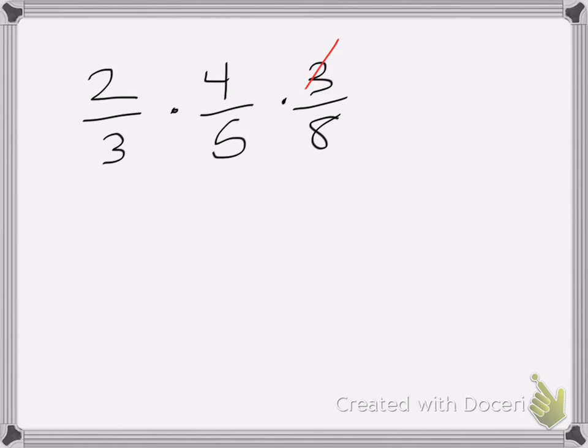Well, I can cancel the 3s. 3s are the same. 3s become 1s. I can cancel the 8 and the 4, 4 becomes a 1, 8 becomes a 2. And now I can also cancel this 2 and this 2. Both those become 1s.